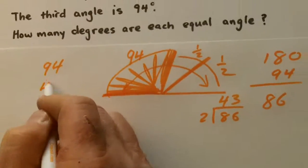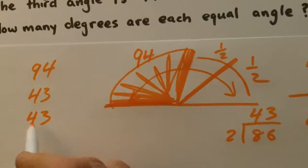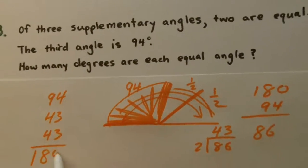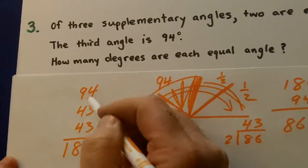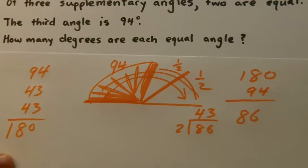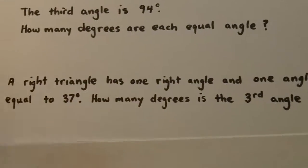So if we have one angle at 94, then 43, then 43, since those are supplementary they should add up to 180. 43 and 3 is 10, 94 adds up to 180. Perfect.